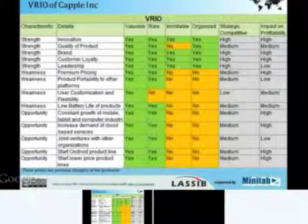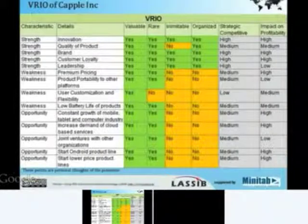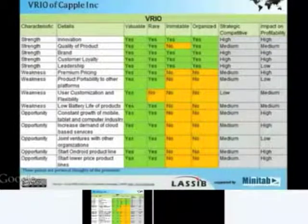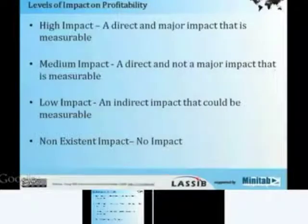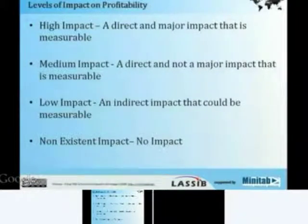You would have noticed that we are not mentioning threats in the VRIO framework because threats are external to an organisation and cannot be controlled by us. Regarding levels of impact on profitability: a high impact indicates a direct and major impact that is measurable. A medium impact indicates a direct but not major impact that is measurable. A low impact indicates an indirect impact that could be measurable.